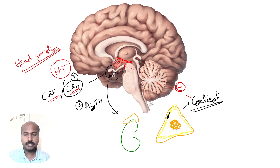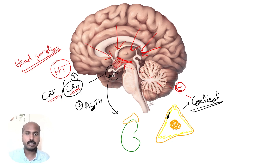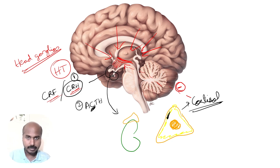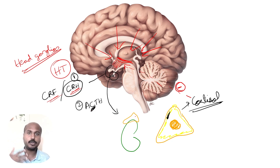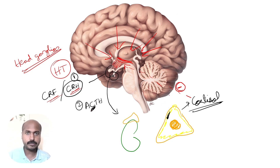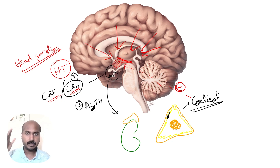To summarize: a stress response sends impulses toward the hypothalamus, causing release of corticotrophin releasing hormone, which in turn causes release of ACTH, which makes the adrenal cortex secrete cortisol, which then negatively reduces CRH production.